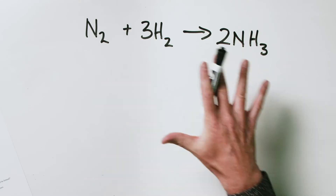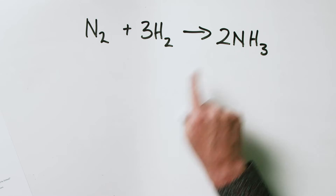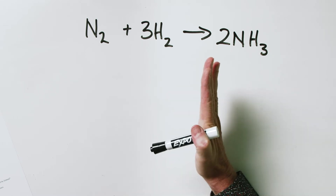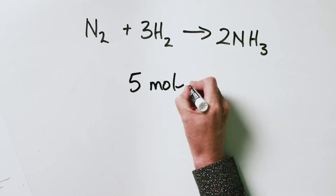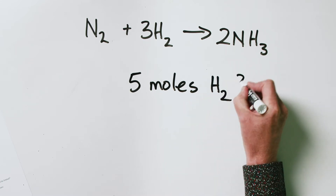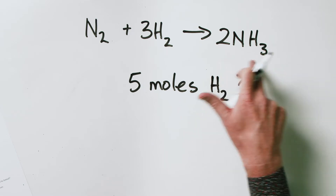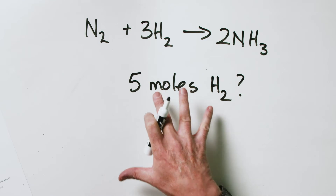Where it starts getting complicated — and where people have trouble — is when the actual amounts don't correspond exactly to these numbers. What would happen if instead of starting with three moles of hydrogen, we started with five moles of hydrogen? How much nitrogen would we need for complete reaction, and how much ammonia would we get from this reaction starting with five moles of hydrogen?